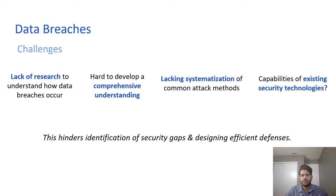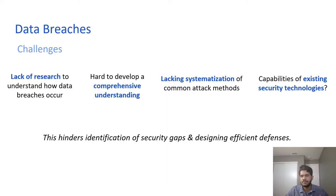In order to motivate our study, I'll describe why it is important to study data breaches. Despite their prevalence, these incidents have not received due attention from the security and privacy community, and there is a lack of research to understand how data breaches occur in real life. Data breaches are usually considered outcomes of other security issues such as human error and software vulnerabilities. There is also a lack of academic literature, making it hard to understand how breaches take place. Another problem is the lack of systematization of common attack methods, and the capabilities of existing security technologies to prevent data breaches are mostly unknown. All these challenges make it hard to identify security gaps and design efficient defenses.